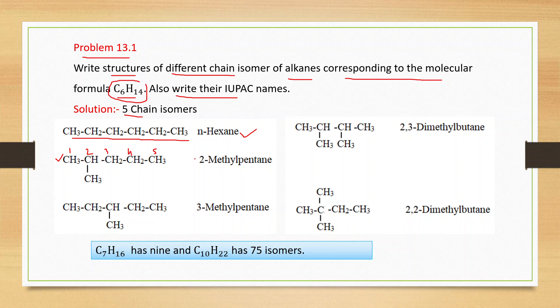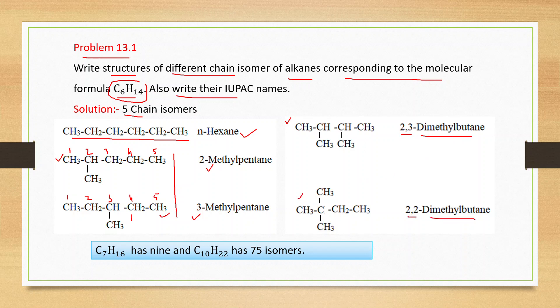So its name is 2-methylpentane. Now if we branch at the third carbon atom, its name is 3-methylpentane. If you have branching in a five-carbon parent chain, you have two isomers. Now with four carbon atoms in the parent chain and two methyl substituent groups, we get 2,3-dimethylbutane and 2,2-dimethylbutane.